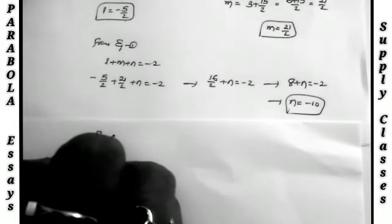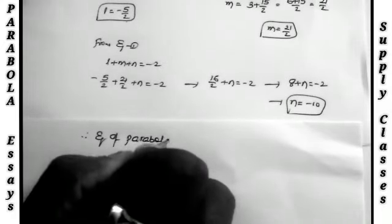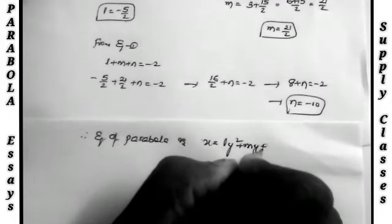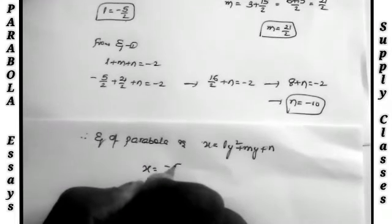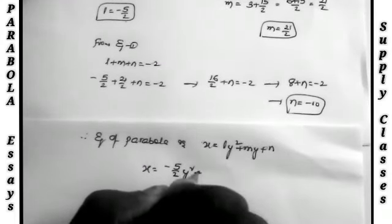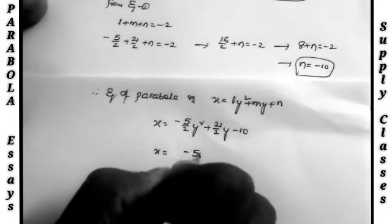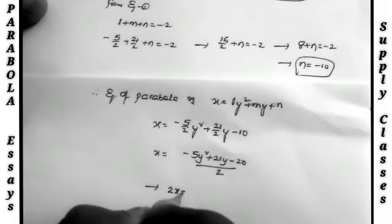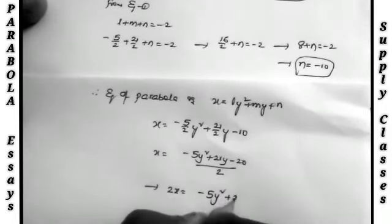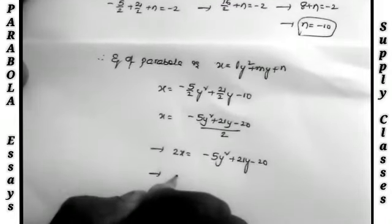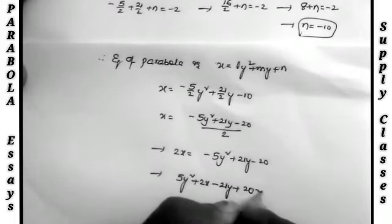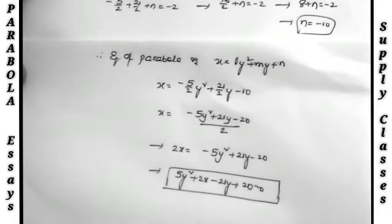Therefore the equation of the parabola is x = ly² + my + n, substituting the values: x = (−5/2)y² + (21/2)y − 10. Taking the LCM: x = (−5y² + 21y − 20)/2. Cross-multiplying: 2x = −5y² + 21y − 20. Rearranging, the required answer is: 5y² + 2x − 21y + 20 = 0. This is a very important problem.